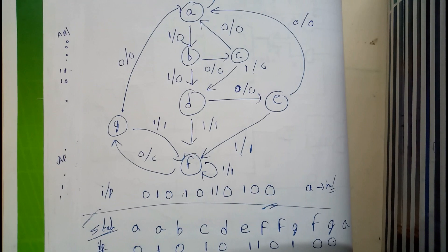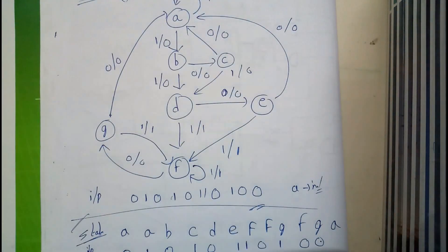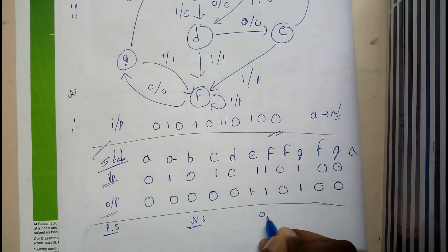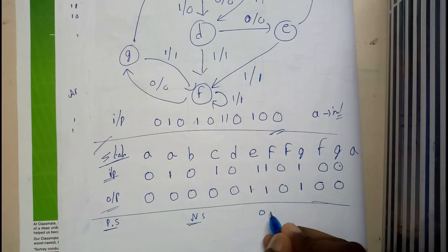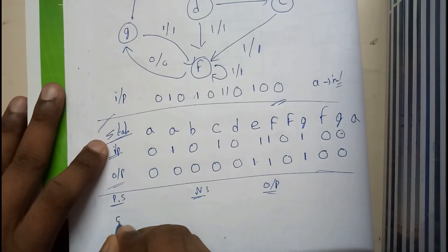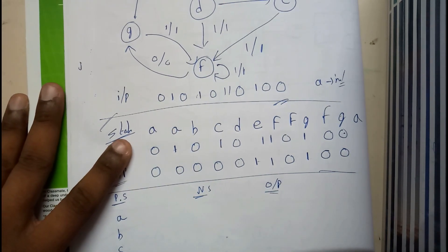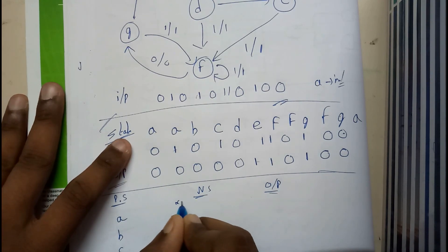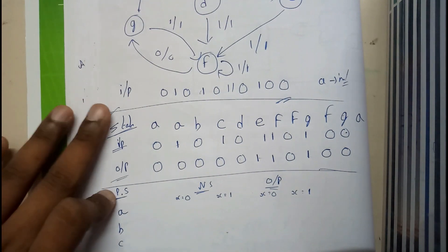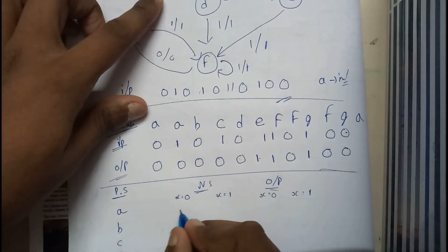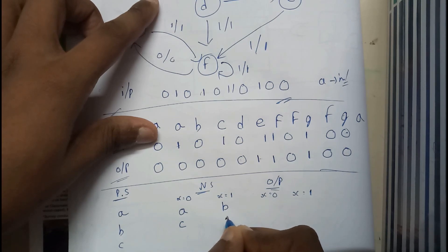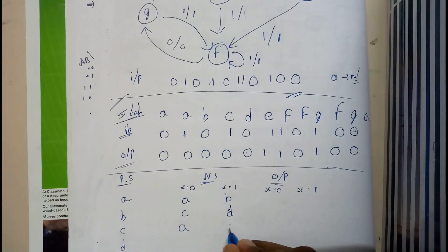Now we are done with the initial step. Let us write all the variables from that table — present states, next states, and output. We consider all states: A, B, C, D, E, F, and G. Columns will be: input equals zero (next state and output) and input equals one (next state and output).